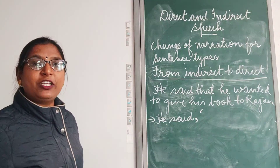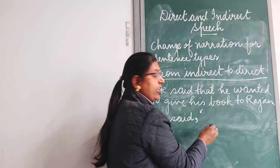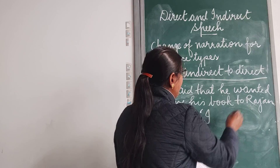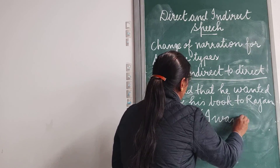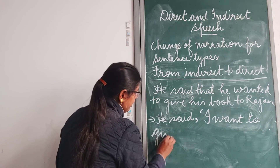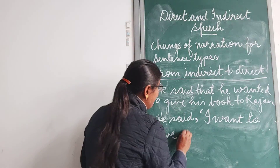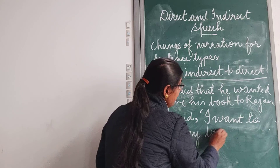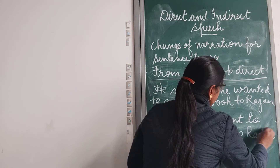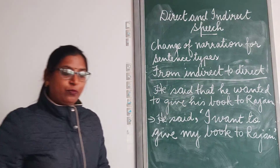Whatever is spoken by the speaker will be placed within the inverted commas. 'He' will be changed to 'I', and the verb 'wanted' will be changed to 'want'. The possessive adjective 'his' will be changed to 'my'. So we get: 'I want to give my book to Rajan.' Full stop, close inverted commas.